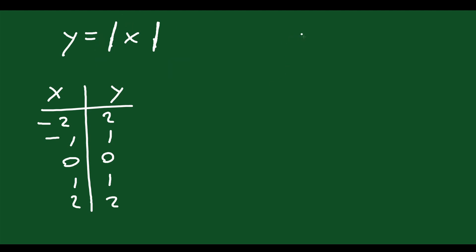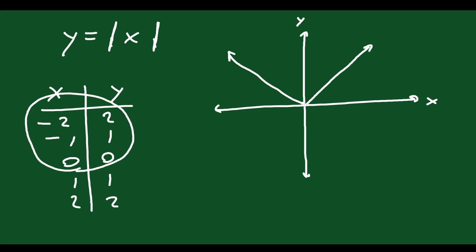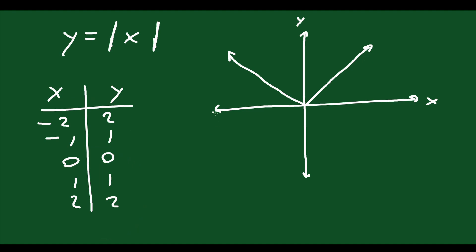When you graph the absolute value function, you get a big V shape. The data to the left of zero looks like a linear function going down with a slope of negative one, and the data to the right looks like a linear function going up with a slope of positive one. It's perfectly symmetrical — if you go to x equals one, it has a height of one, and at x equals negative one, it also has a height of one.